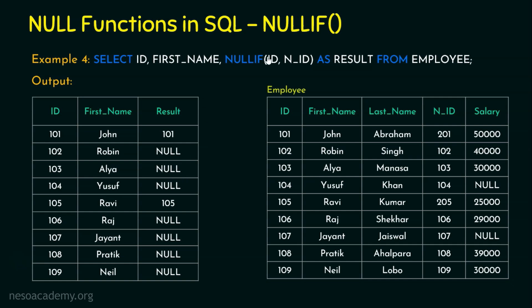The idea behind NULLIF: it compares both expressions — if both are the same it returns NULL, if they are different it returns the value of the first expression as the result. NULLIF can also be used along with SELECT, WHERE, and GROUP BY clauses. If you want the output of new_id instead of the old id, just swap the parameters to NULLIF(new_id, id) and it will meet your requirements. Simply speaking, NULLIF returns NULL if both arguments are matching.